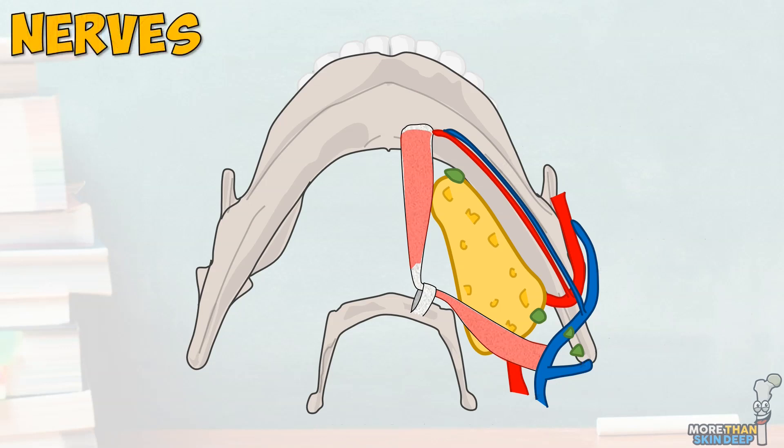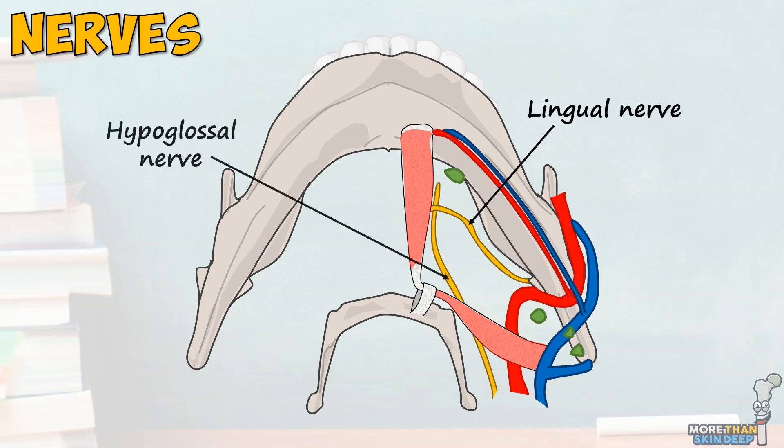The most consistent nerves within the submandibular triangle all lie deep to the submandibular gland so I'll remove it for easier viewing. We have the lingual nerve, the hypoglossal cranial nerve and the nerve to the myelohyoid muscle.